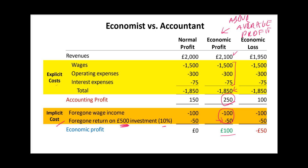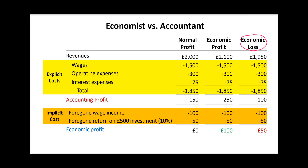Above normal profit, or economic profit, simply means that the accounting profit covers what they have given up — £150 in forgone earnings — plus there is an excess amount, which is the economic profit. Now let's assume the firm makes £1950 in revenue. Taking away the explicit costs gives £100 in accounting profit for the year. Taking away the £150 implicit costs leaves us with a £50 economic loss — a negative economic profit.